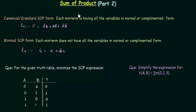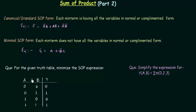In the last presentation we completed the sum of products, which is of two types. The first one is the canonical or standard SOP form and the second one is the minimal SOP form. Let us revise it quickly, then we will solve two problems that I have already written here.